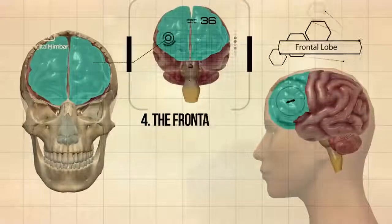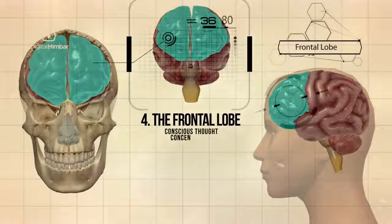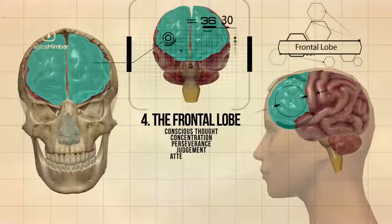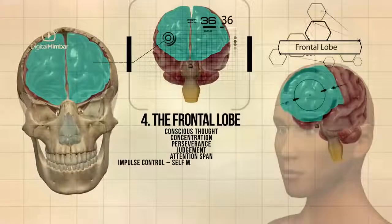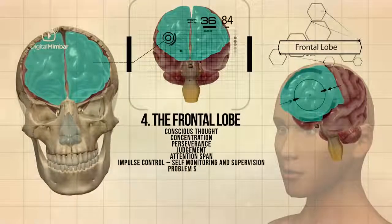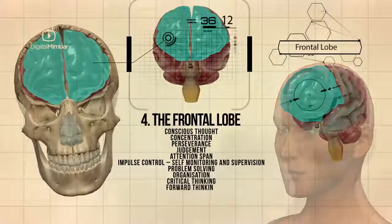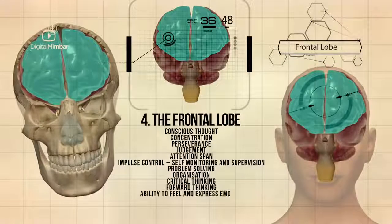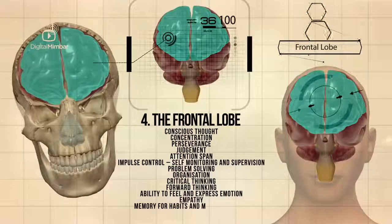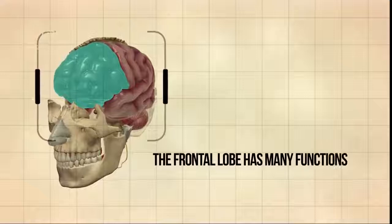And then there is the frontal lobe which is responsible for conscious thought, concentration, perseverance, judgment, attention span, impulse control which is self-monitoring and supervision, problem solving, organization, critical thinking, forward thinking, ability to feel and express emotion, empathy, memory for habits and motor activities.